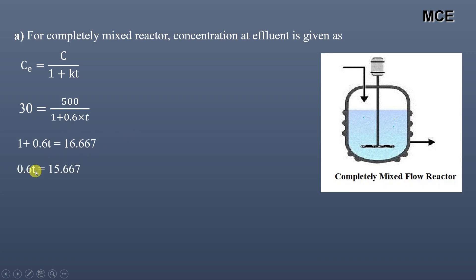Subtracting both sides by minus 1, we get 0.6t equals 15.667. Now dividing 15.667 divided by 0.6, we get the retention time equal to 26.11 hours.